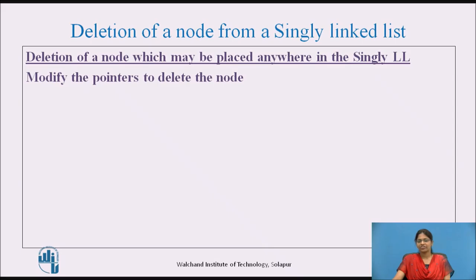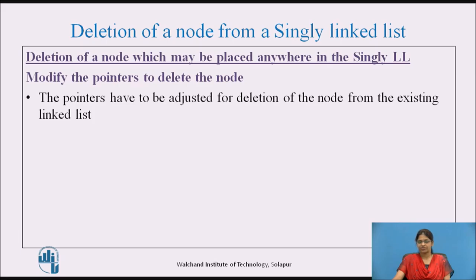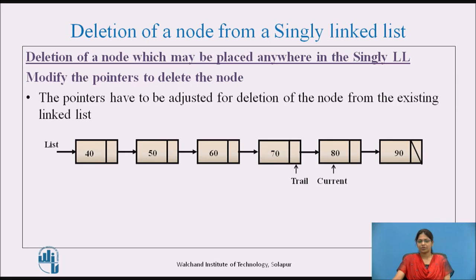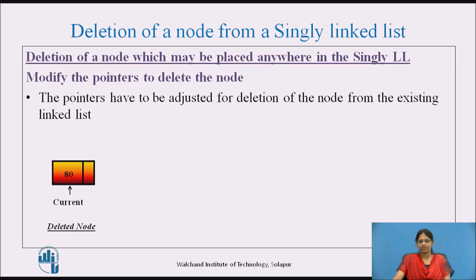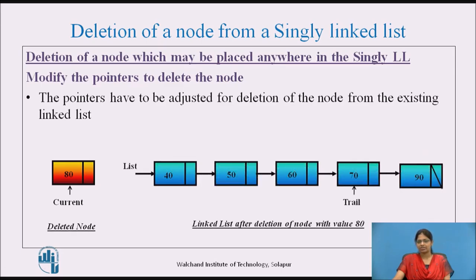The next step is to modify the pointers to delete the node. The pointers are adjusted so that trail's next is assigned to current's next. After this adjustment, the deleted node is pointed by current, and the linked list is updated after deleting the node with value 80.